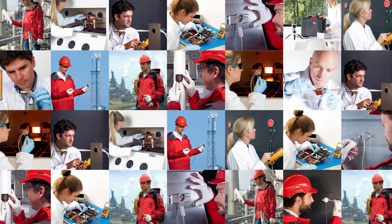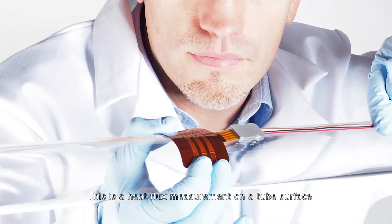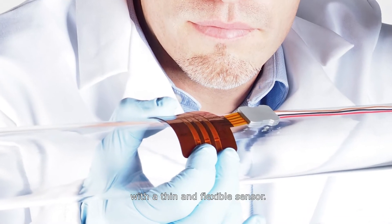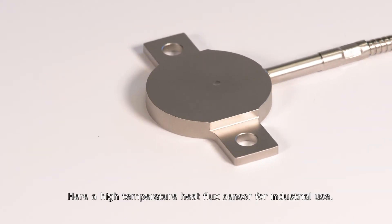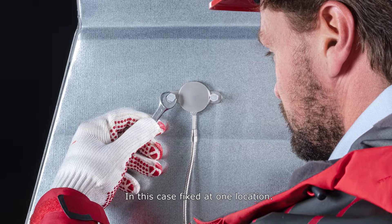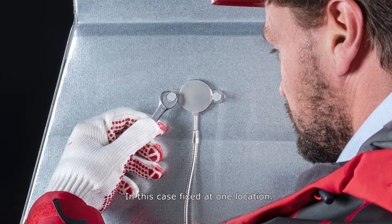Here are some examples. This is a heat flux measurement on a tube surface with a thin and flexible sensor. Here a high temperature heat flux sensor for industrial use, in this case fixed at one location.